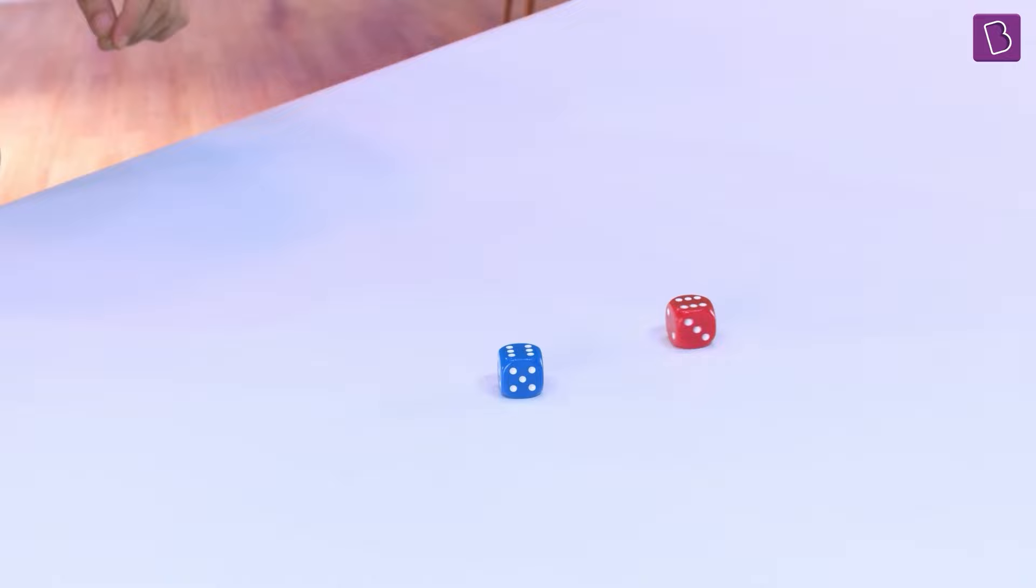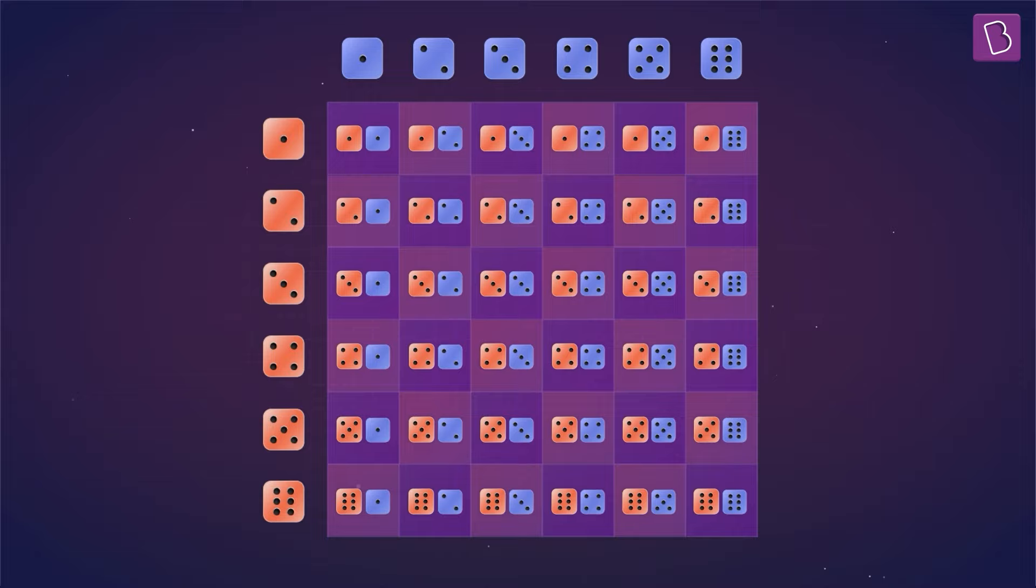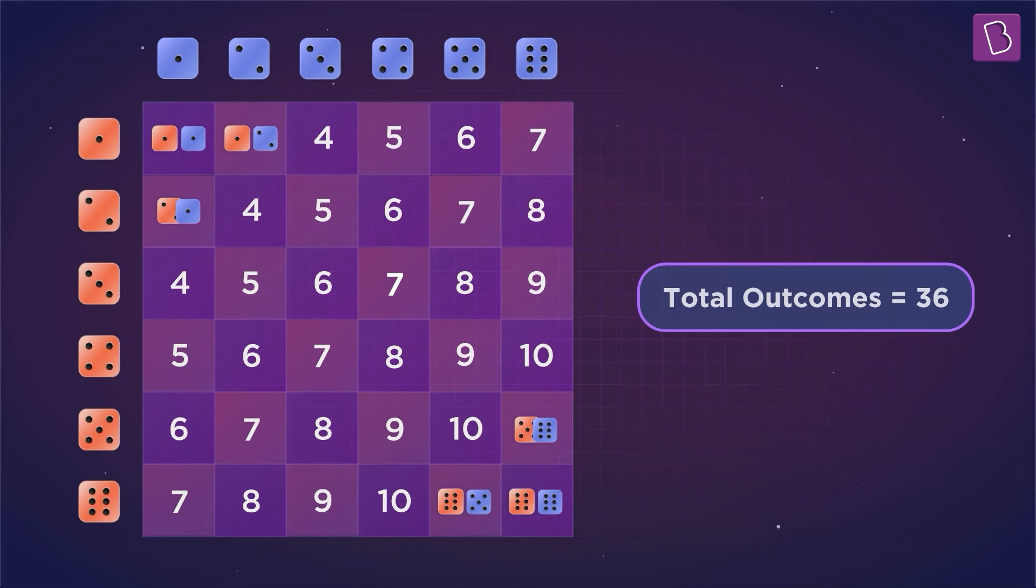Let's list one to six on both dice separately, and then get the sum of each pair to see the possible outcomes we can get. Okay, here we go. So, they are getting arranged diagonally.